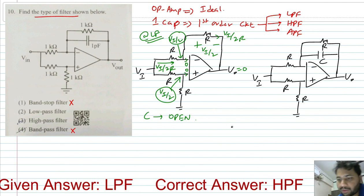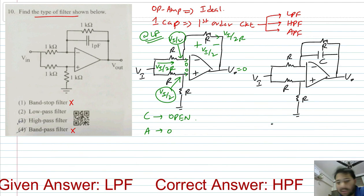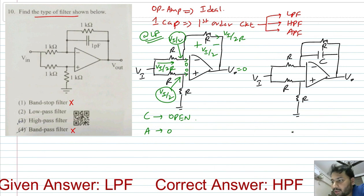At low frequency, the output is 0. If the output is 0, the gain is also 0. So here itself we can say the given circuit is a high-pass filter, but let us go ahead and find the output at high frequency as well.